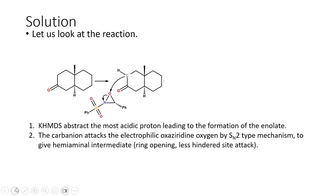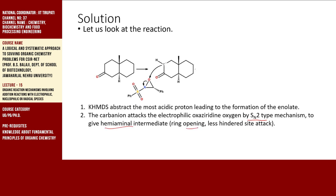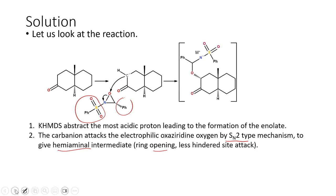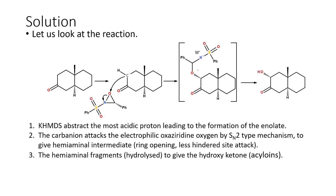The enolate now attacks the oxaziridine ring via an SN2-type addition — it attacks the oxygen, leading to ring opening and formation of a hemi-aminal intermediate. The site of attack happens from the less hindered side because there is a bulky group on nitrogen and a bulky phenyl ring on the other side. This intermediate is highly reactive. The species then undergoes hydrolysis of the relevant bond, and we end up with the hydroxy compound.